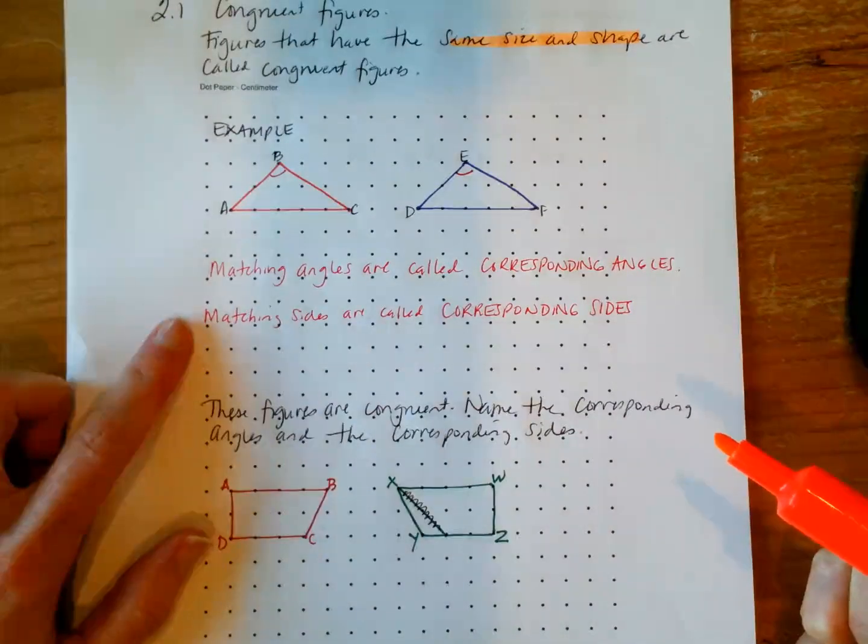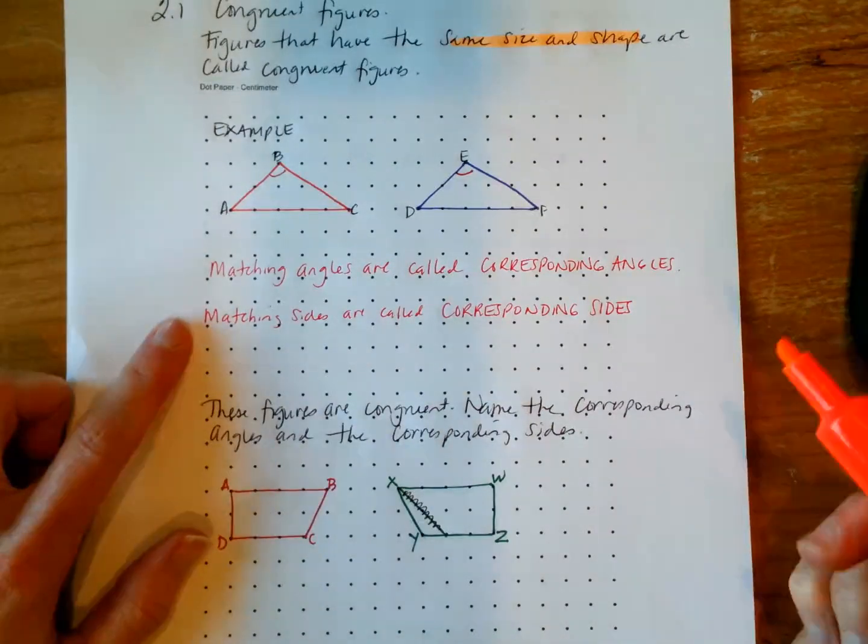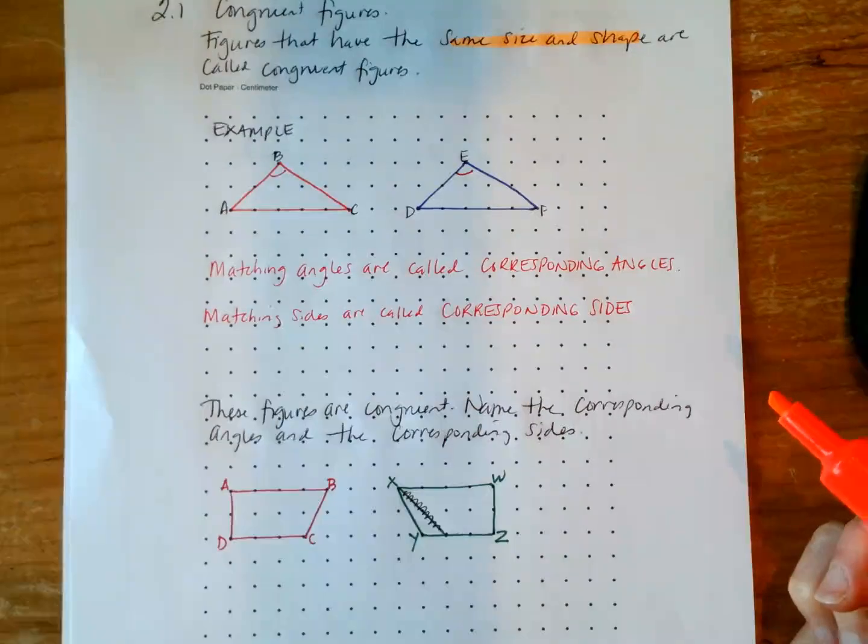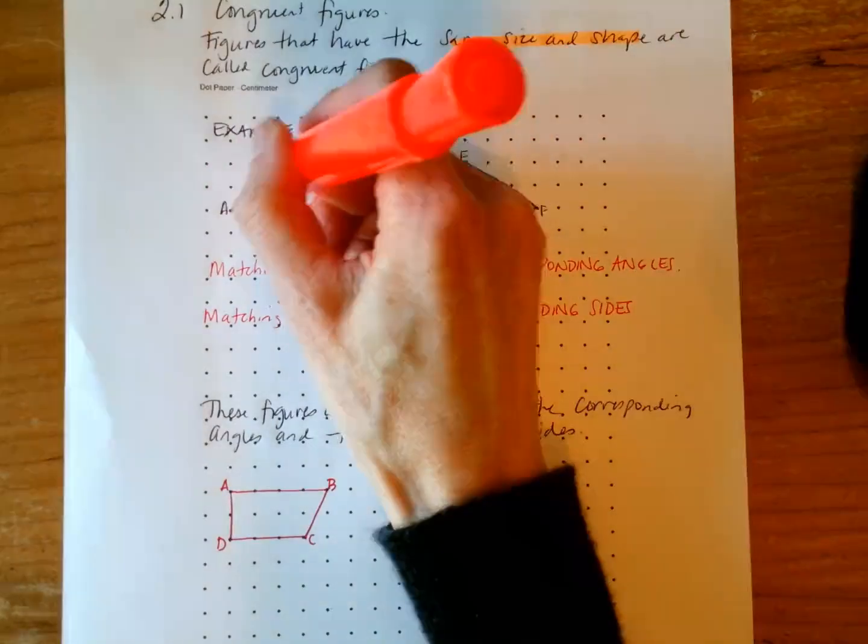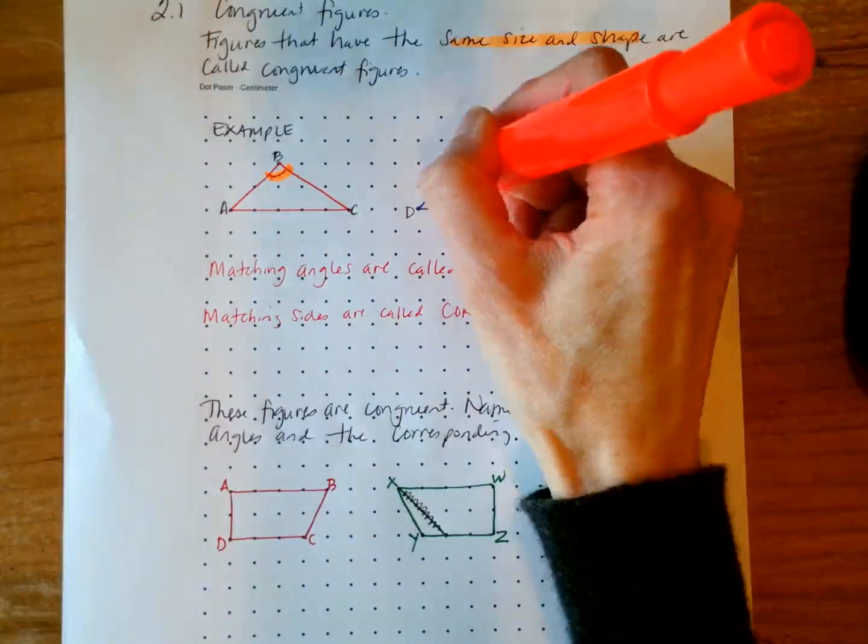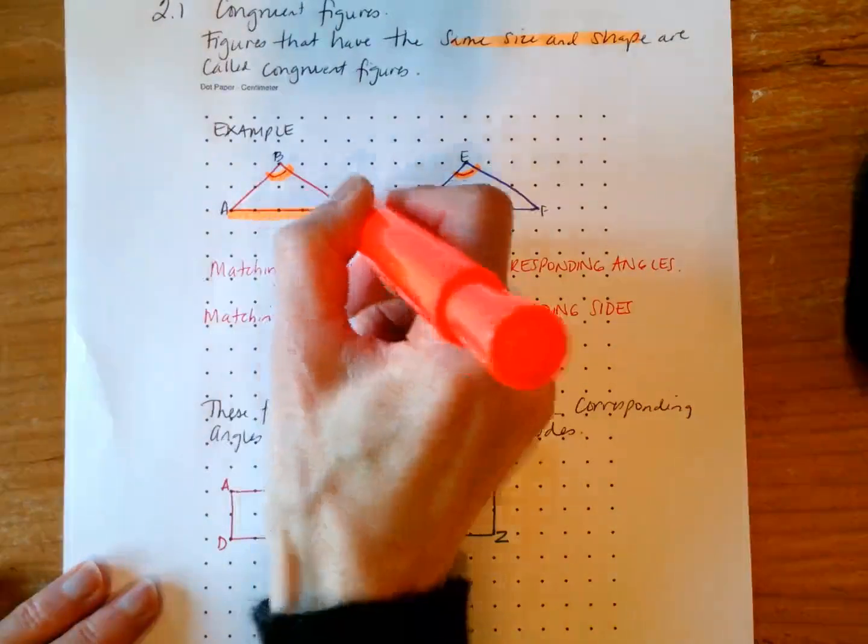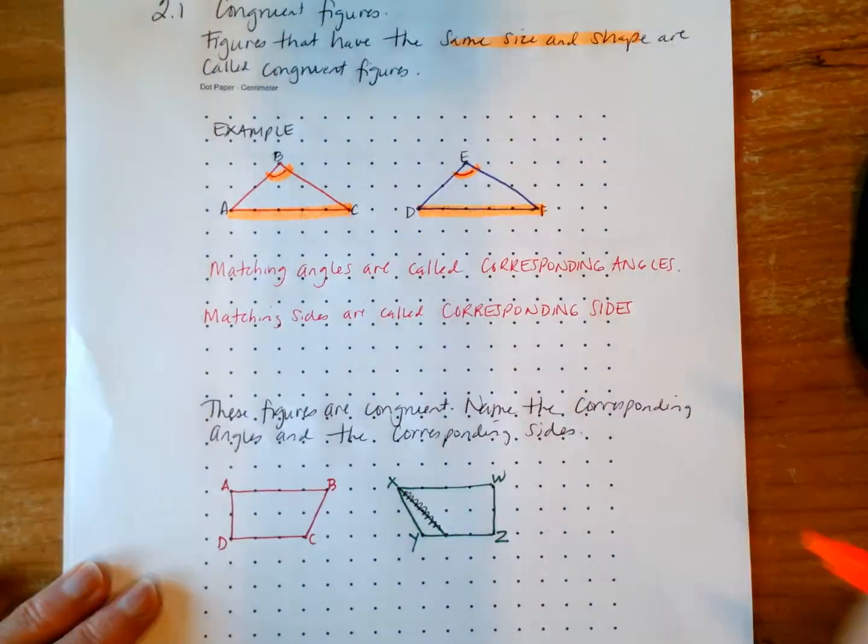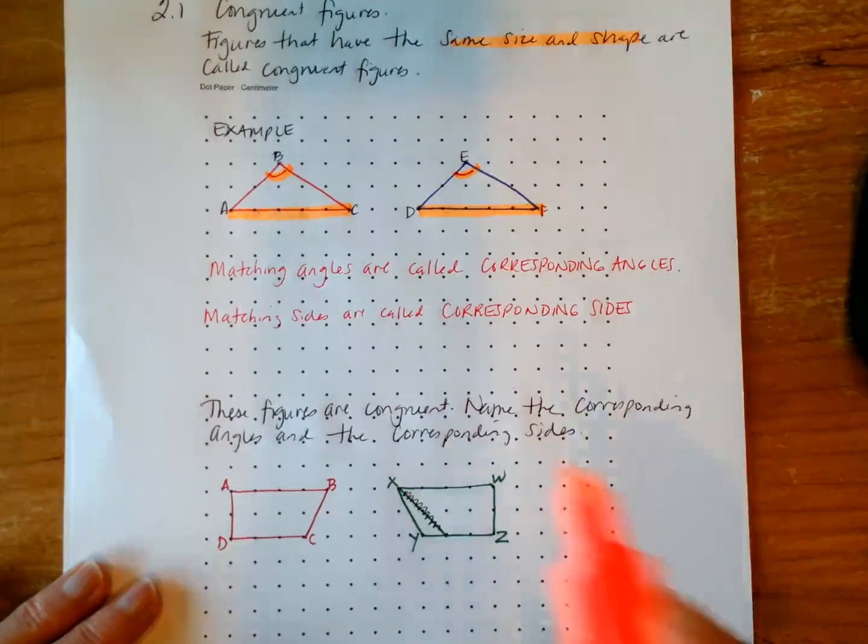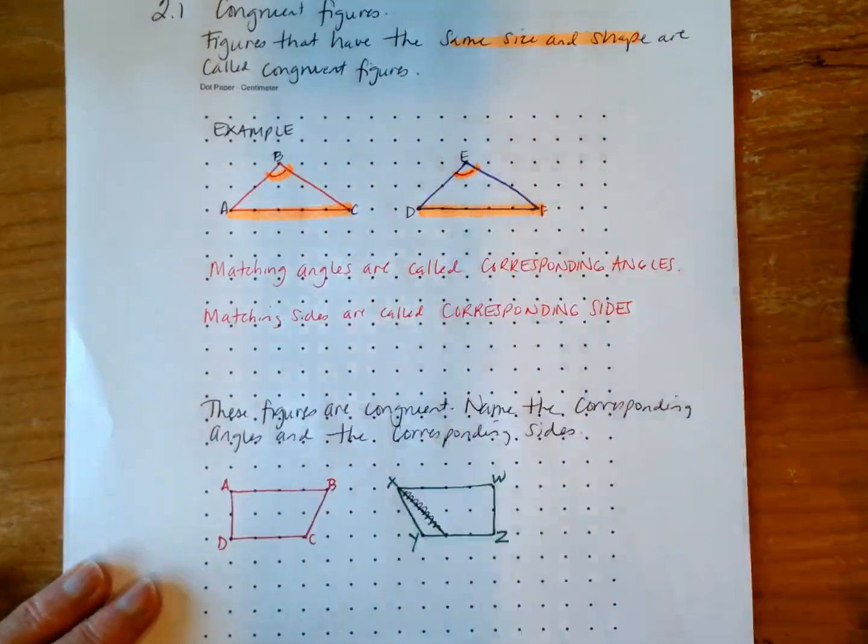They have matching angles, which are called corresponding angles. And so that would be identified by that there. So these angles match, so they are called corresponding angles. And then they have matching sides, which are called corresponding sides. And that would be all three of these sides, but we'll just highlight those down there at the base. So all of these sides are corresponding sides.